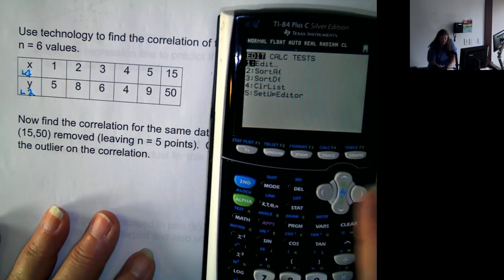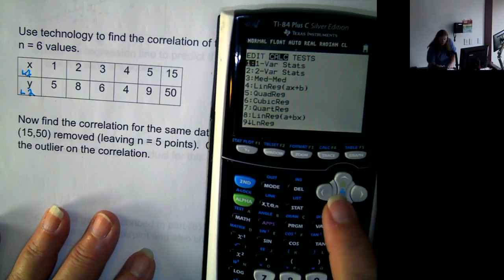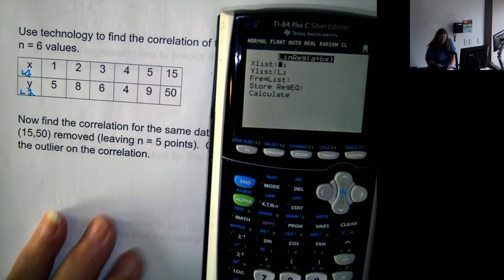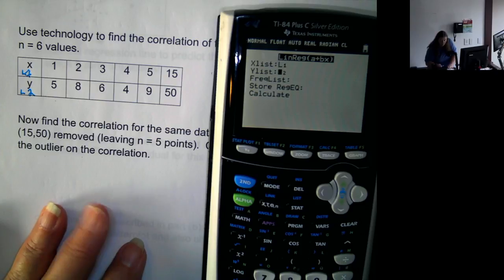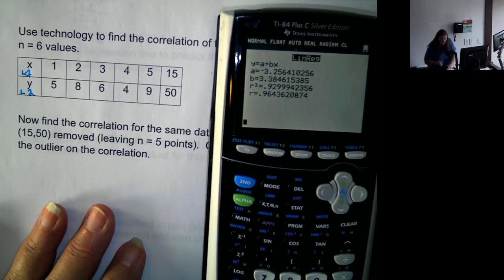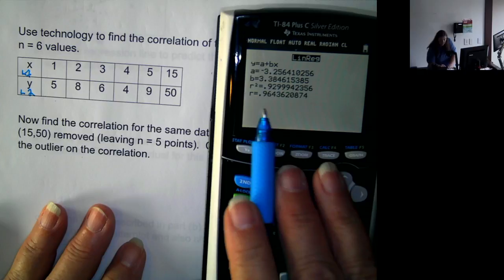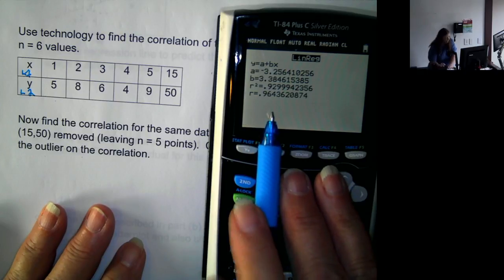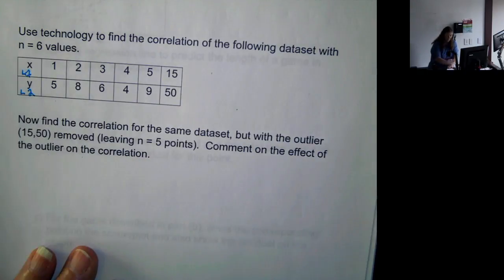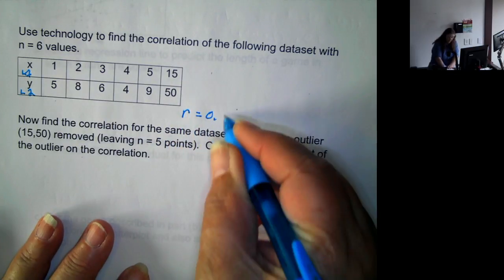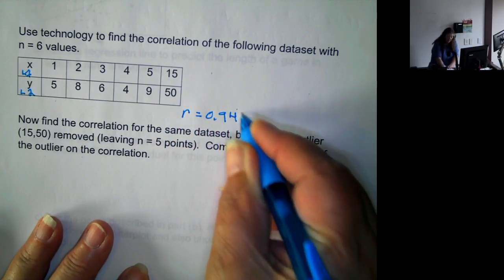Now, we go to stat, calc. We're going to go down to number 8. Yes, our x is in L1. Our y is in L2. We don't care about the rest. Calculate, and it tells us our r is approximately 0.964. So r equals 0.964.